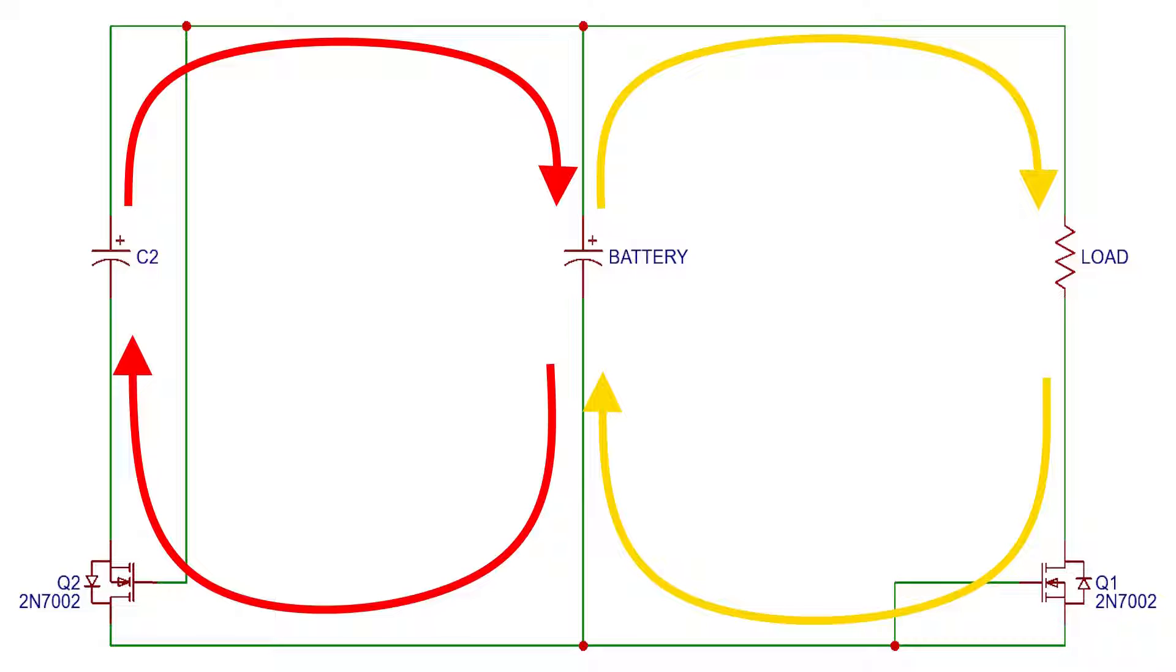Second, not all panels have a blocking diode, which could cause the battery at night to drain empty into the panel. With an extra MOSFET we can prevent this from happening.